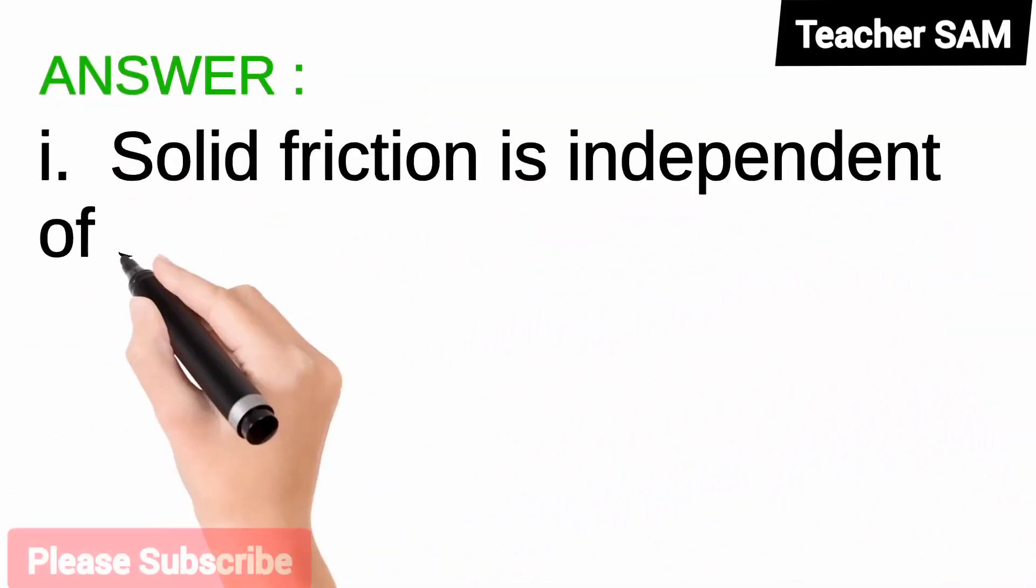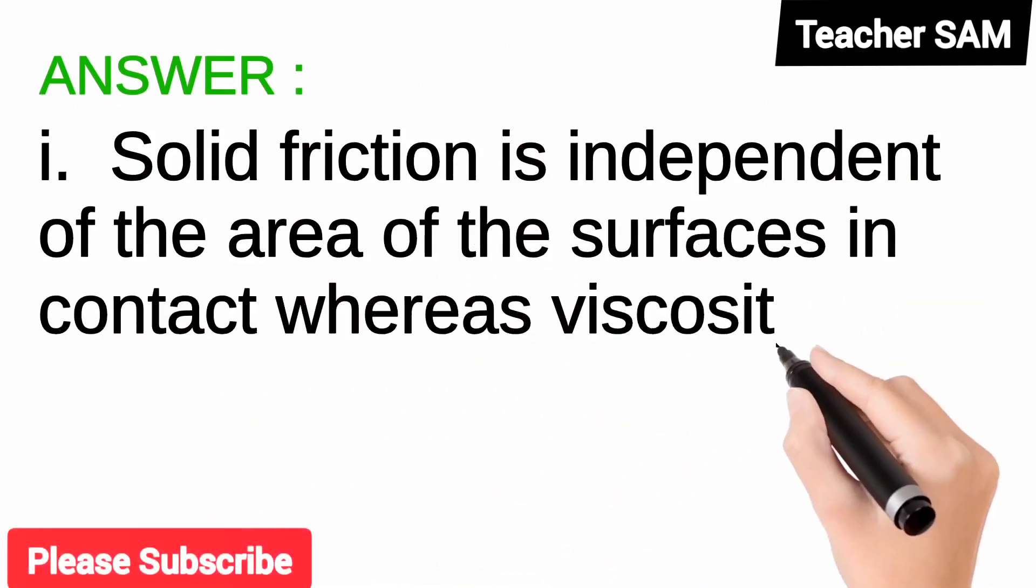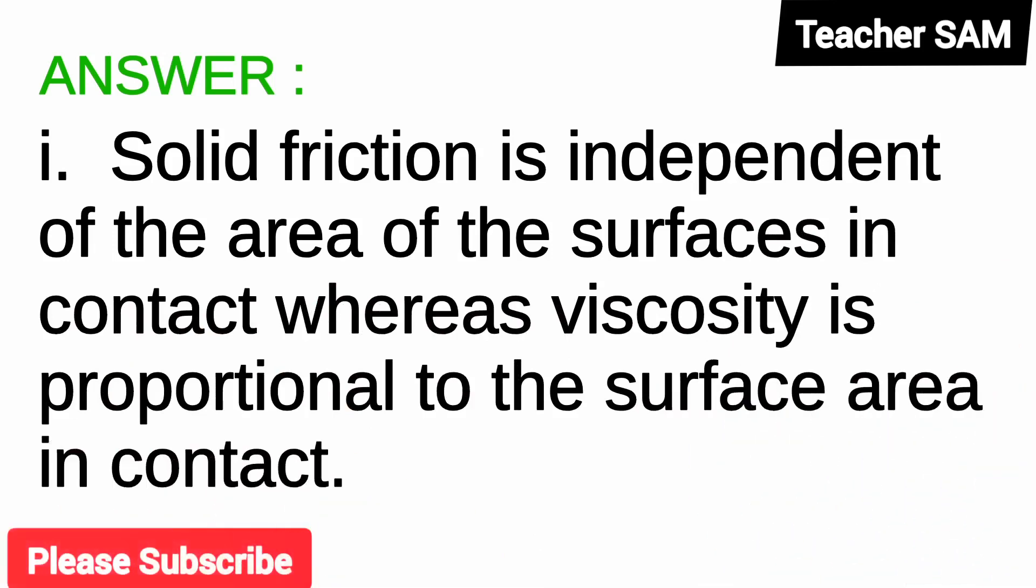Solid friction is independent of the area of the surfaces in contact, whereas viscosity is proportional to the surface area in contact.